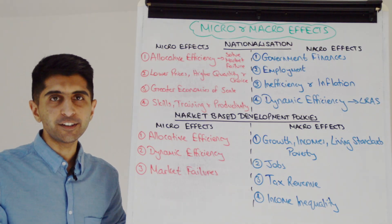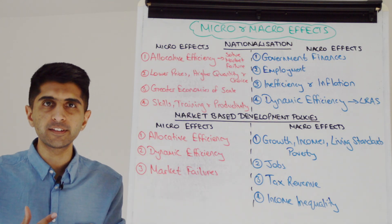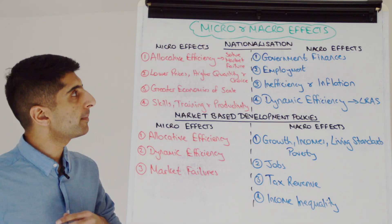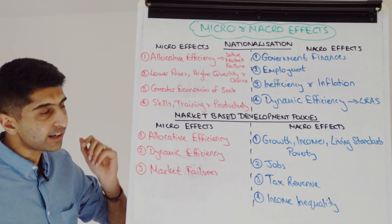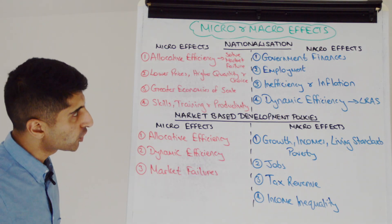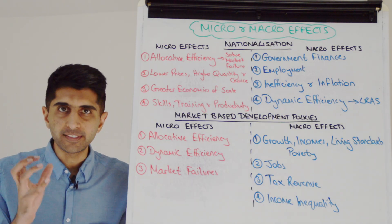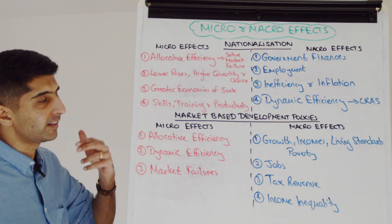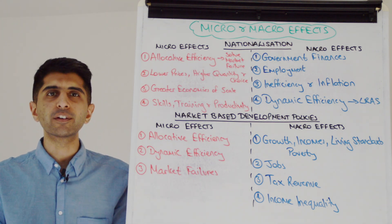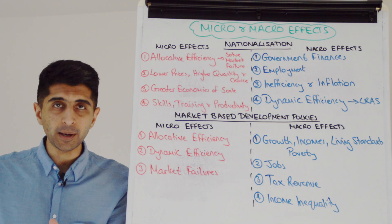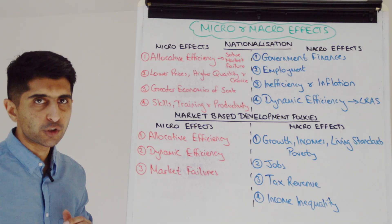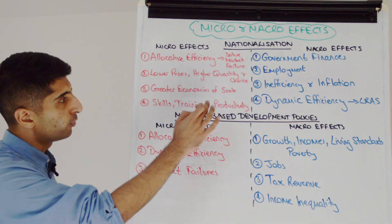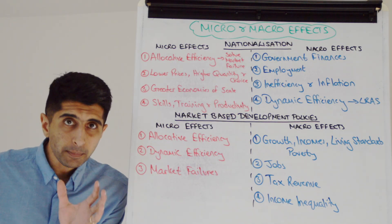So the micro and macro effects of nationalization. Let's go to micro effects first. We can talk about how nationalization might be solving a market failure in the form of monopoly power, so dealing with that monopoly power gives us allocatively efficient outcomes. We can then talk about lower prices, higher quantity, and better choice for consumers. Why? Because the state in theory has an objective of maximizing social welfare. You could talk about how one dominant state-run firm could benefit from greater economies of scale, especially in a natural monopoly market. And we could talk about how the state is not a profit-maximizing employer and therefore might focus more on training workers, boosting productivity, and improving skills.